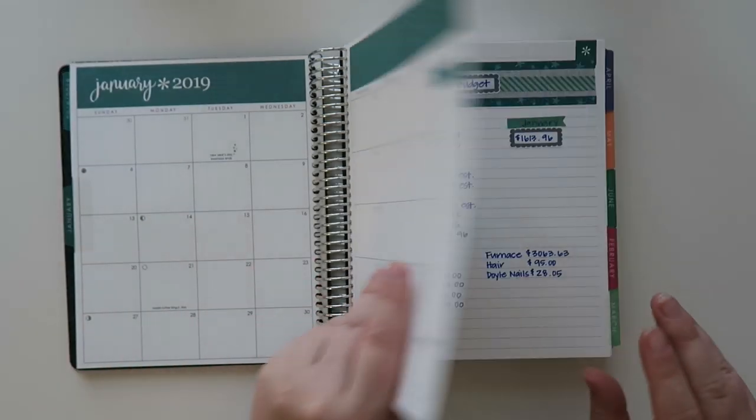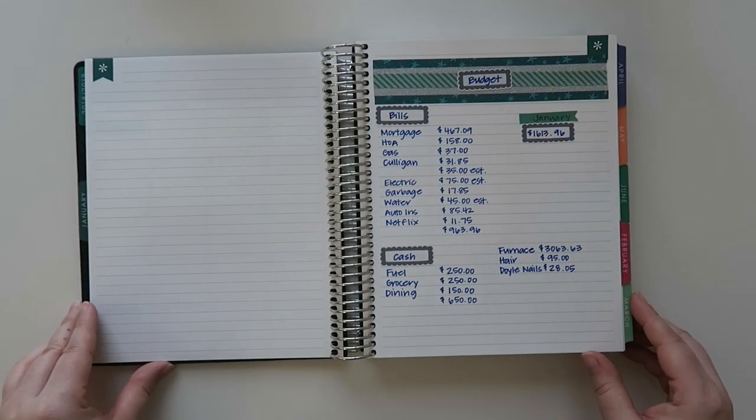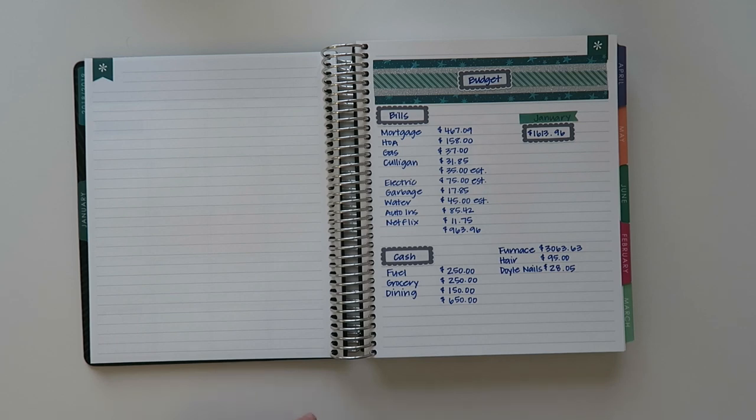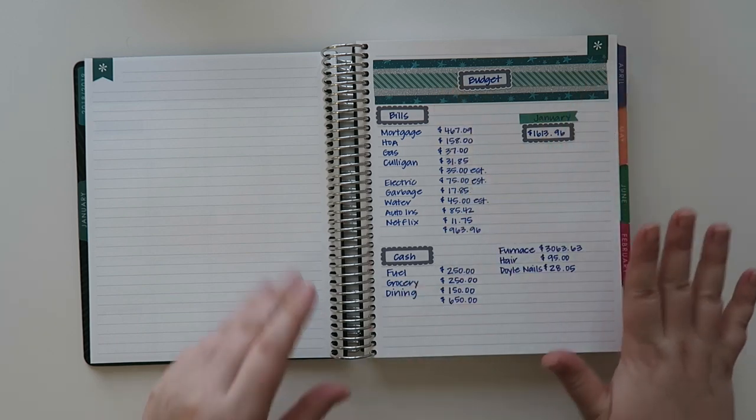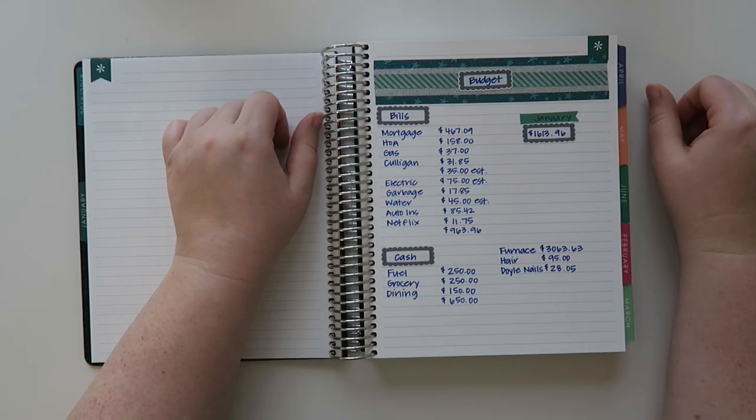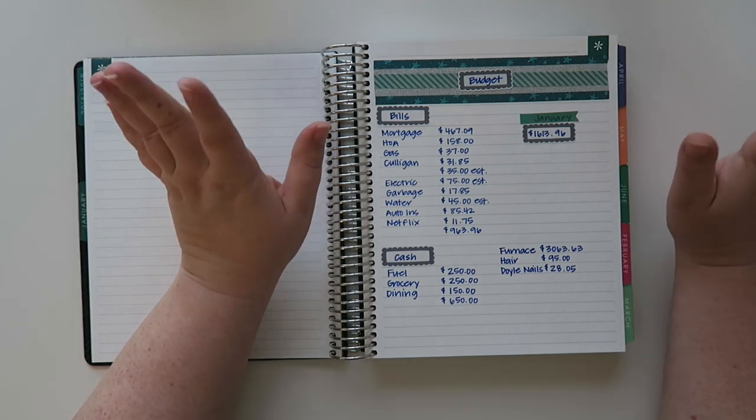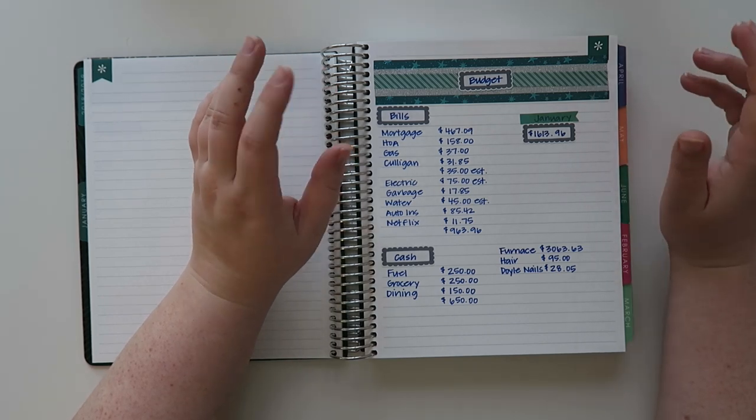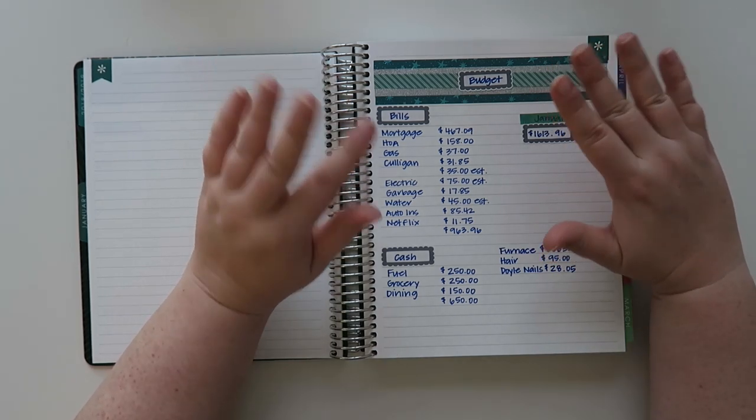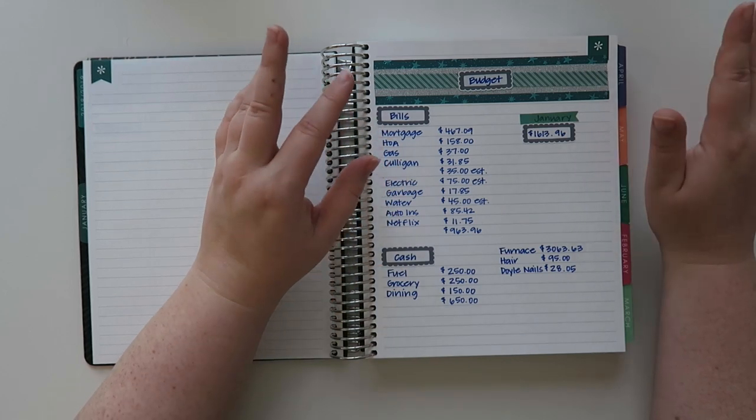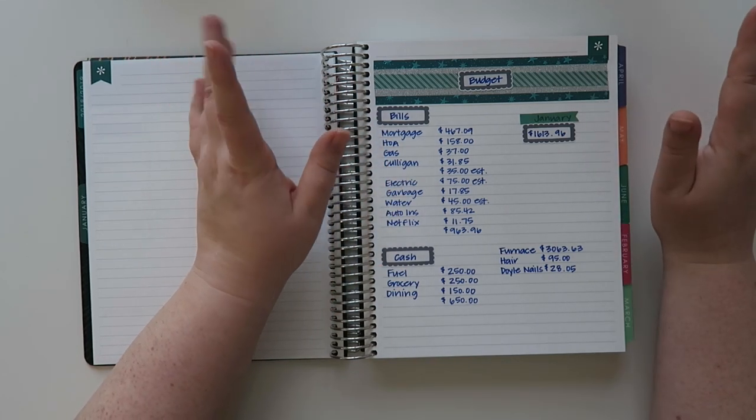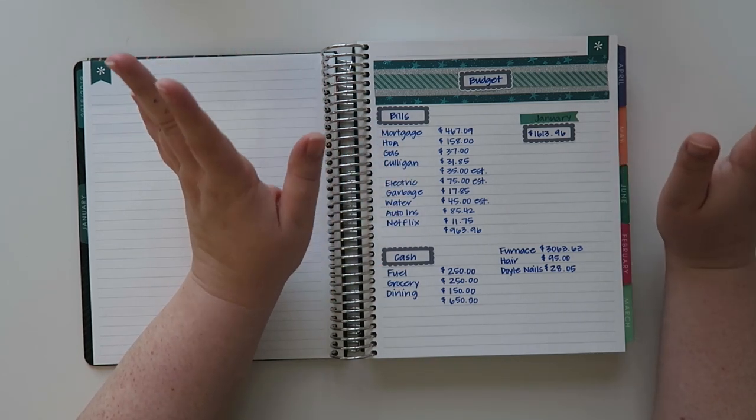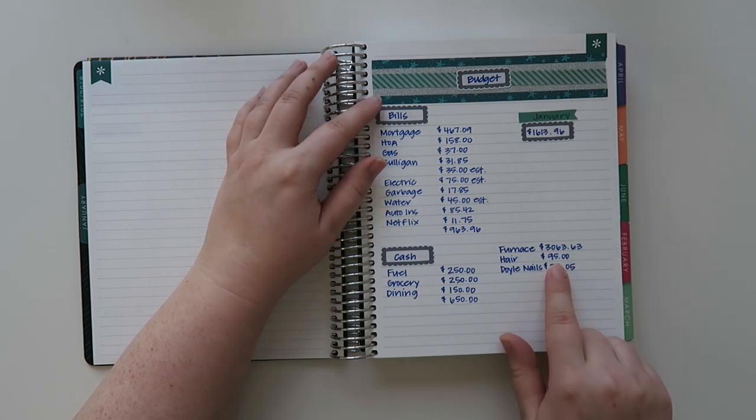January was kind of crazy. I'll leave my January budget linked up in a card for you guys, but I had a lot of unexpected expenses. First thing that happened was I sent a message to my hairstylist asking if she had any appointments available. Usually she's backed up for at least a month. I was thinking it would be in February, but no, she was available in January, so I got my hair done for $95.